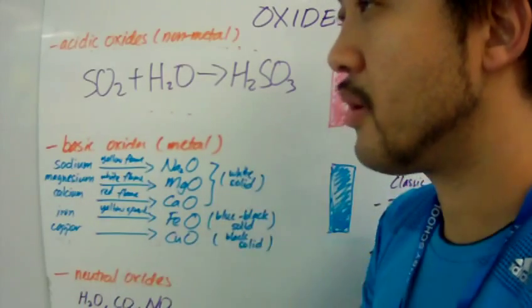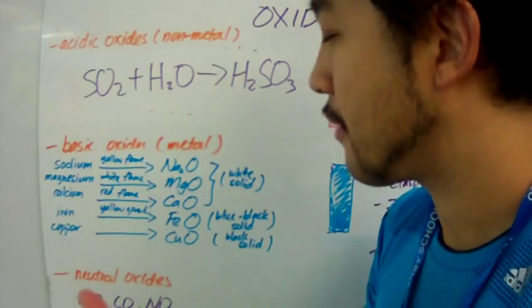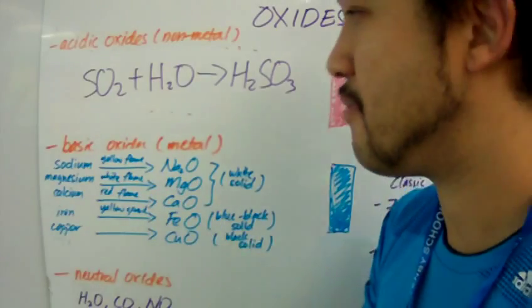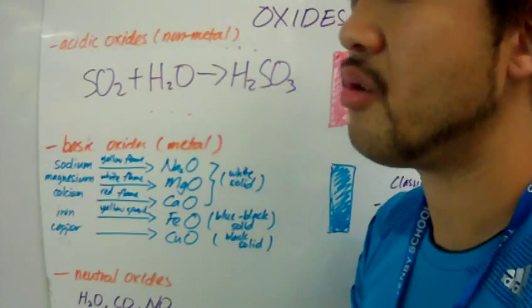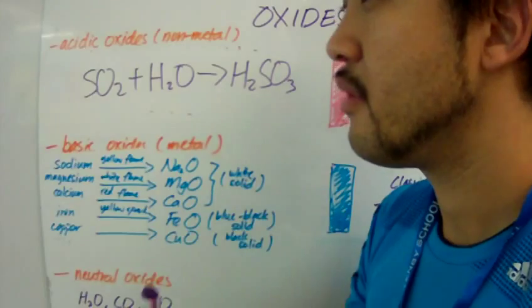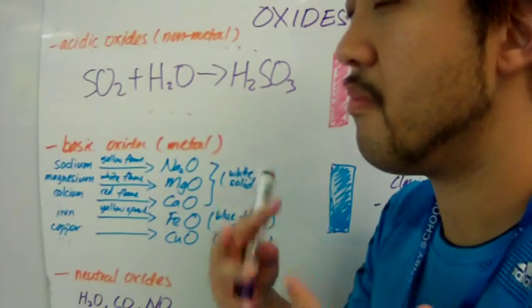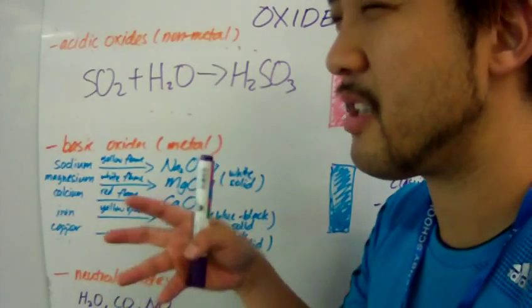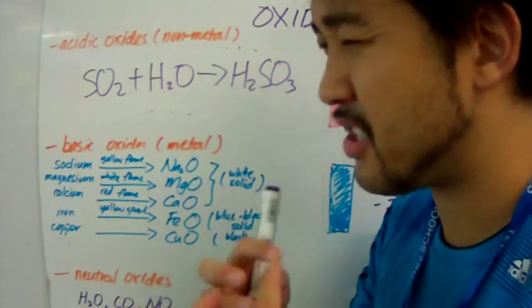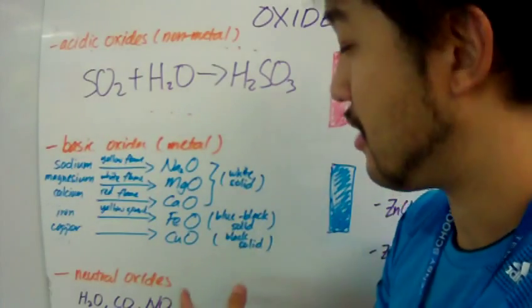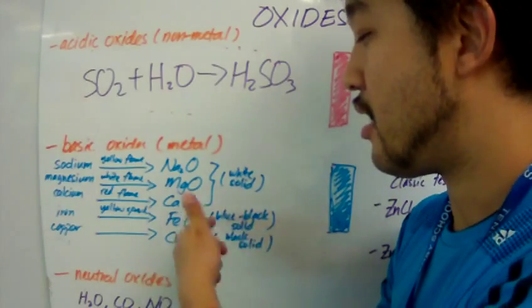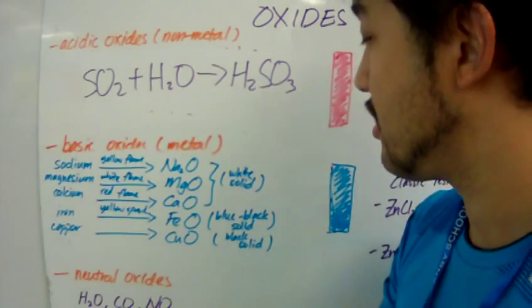You can also do this with transition metals. Iron - burning in the presence of oxygen, you get a yellow spark. Not really like that, but you get iron II oxide. Copper, you won't really get anything that is glowing, but it will just suddenly become black. That black solid is copper II oxide. Iron oxide is kind of like blue-black solids.